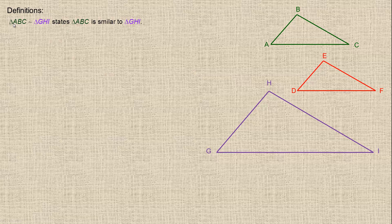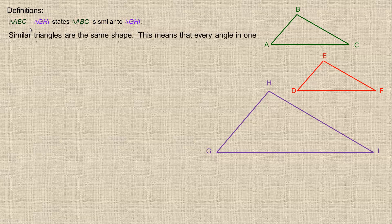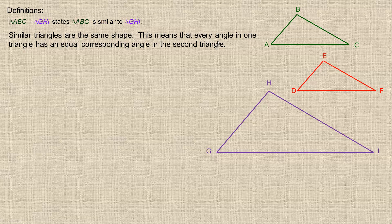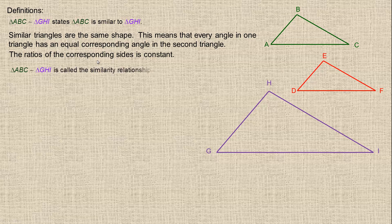If I write triangle ABC, this little squiggle stands for 'is similar to' GHI. So that states that those two triangles are similar — that's how you write it mathematically. Similar triangles are the same shape, meaning every angle in one triangle has an exactly equal corresponding angle in the second, and the ratio of the corresponding sides is constant. This is called the similarity relationship.